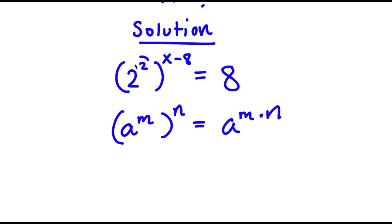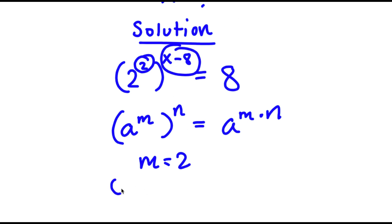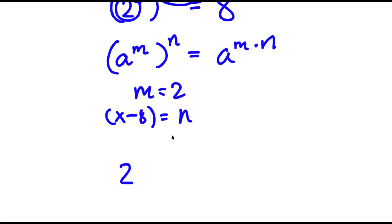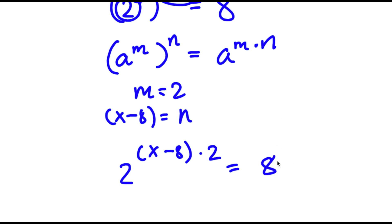Now, if I have something in the form a to the power of m to the power of n, this is equal to a to the power of m times n. So in this case, I have 2 to the power of 2 to the power of x minus 8. We can think of 2 here as m and x minus 8, the whole thing, as n. So I can rewrite this as 2 to the power of x minus 8 times 2, and this is equal to 8.